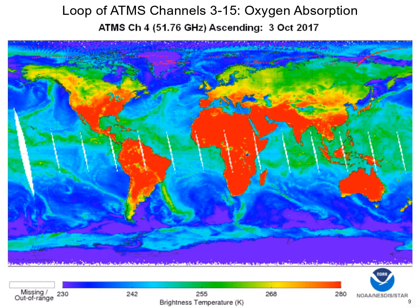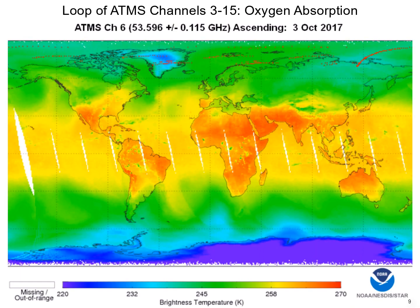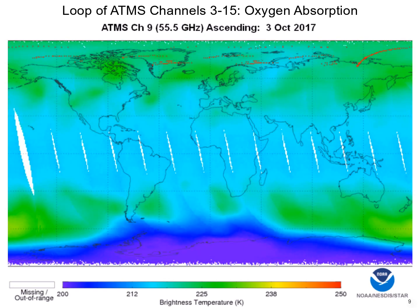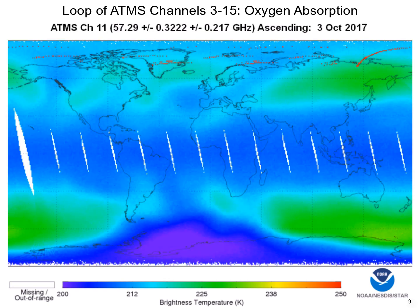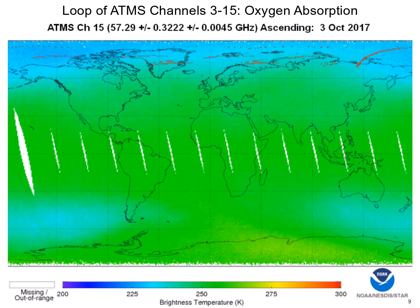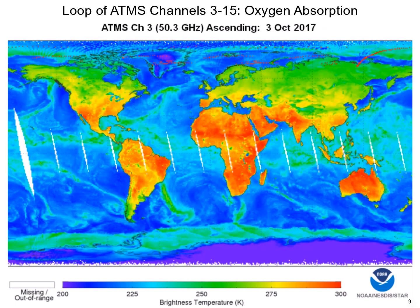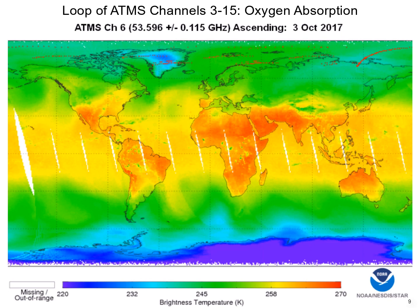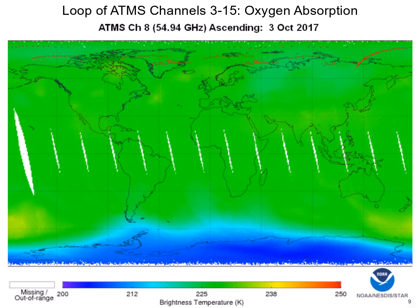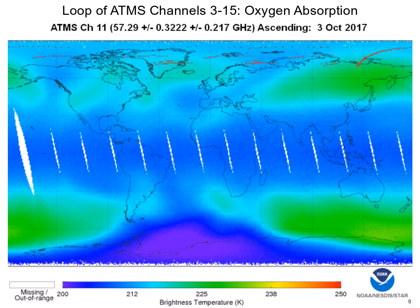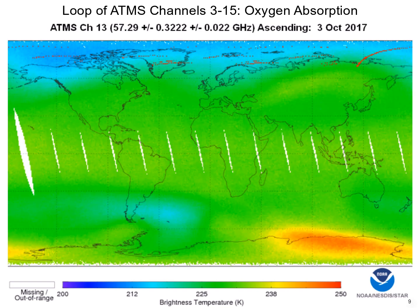This is a loop of ATMS brightness temperature imagery for channels 3–15. Notice how brightness temperature changes with frequency from the edge of the oxygen absorption region towards the center. You are encouraged to use the link provided to replay and pause the loop at your own pace. Think about when surface features are apparent and when they disappear, as well as how a temperature profile at the poles would compare to the tropics. Current and archived imagery can be found using the provided link.